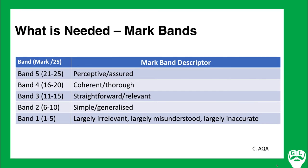The mark bands are in five bands out of 25. The mark band descriptors AQA provide refer to the top bands as perceptive and assured — if someone can provide an assured response where they really know the text and are able to analyse and comment upon it, that's really successful. Going all the way down to band one, you're really not answering the question. The bands roughly correlate to certain grades, but they do change slightly with every year.